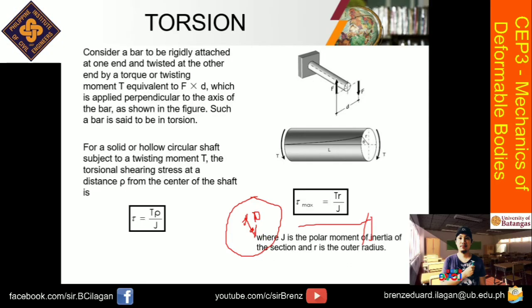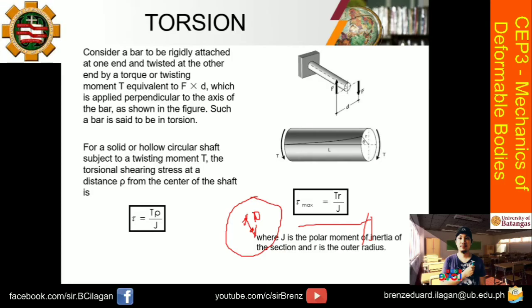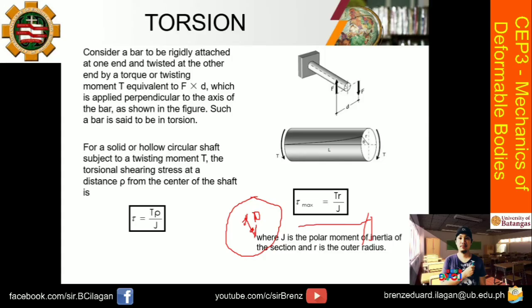Now, what is J? J is the polar moment of inertia. If you recall from Statics of Rigid Bodies, J is simply the sum of Ix and Iy — that is, the sum of the moment of inertia with respect to the x-axis and the y-axis.